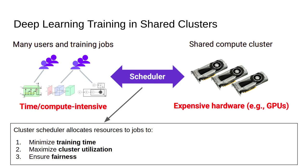There is a scheduler that takes training jobs from different users and schedules them to the shared cluster by allocating resources. With N GPUs, there is an assignment matrix indicating which GPU is assigned to which job. It is also possible that a GPU is shared between two jobs. The objectives of such a scheduler are to minimize training time, maximize cluster utilization so no GPU is idle, and ensure fairness — so that no job is starved.